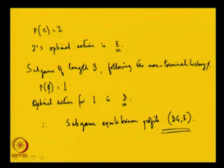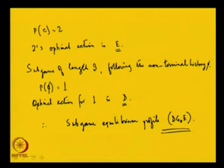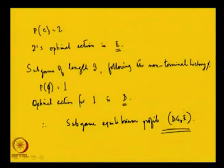The subgame perfect equilibrium profile is (DG, E). Before the comma: DG is player 1's strategy — play D after history phi, and play G after history CE. After the comma: E is player 2's strategy — if history is C, play E. This is the only subgame perfect equilibrium in this game.